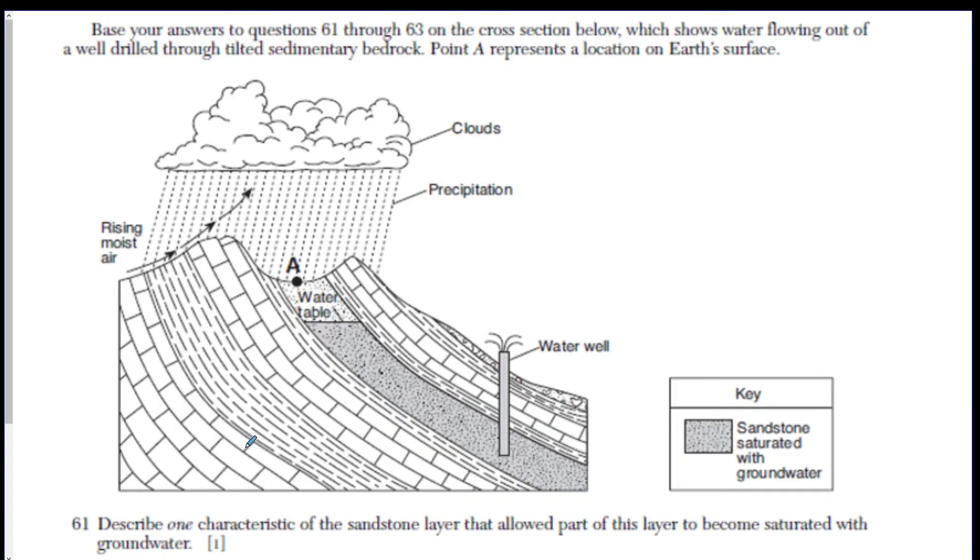Number 61. Describe one characteristic of the sandstone layer that allowed part of this layer to become saturated with water. How could a rock become saturated with groundwater? Saturated means filled up. Well, the only way, based on what topic we're doing, is porosity.